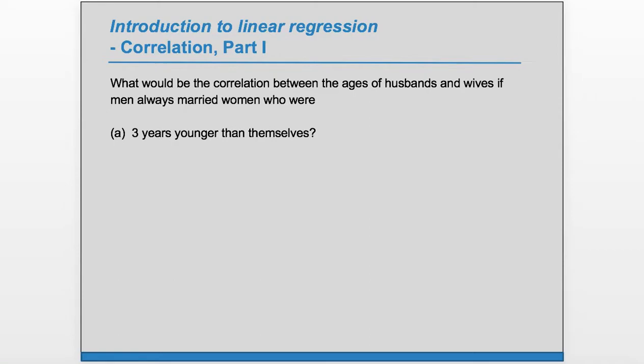So this is a contrived example, but because of this always, we can see that there's perfect correlation. If you know the age of one, then you can know the age of the other with zero error.